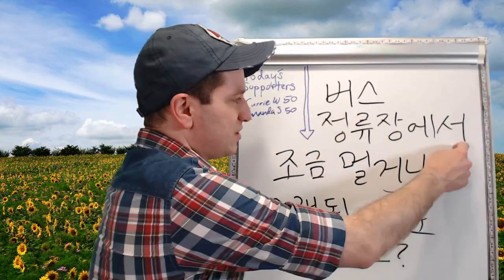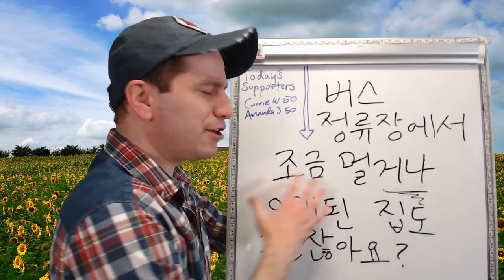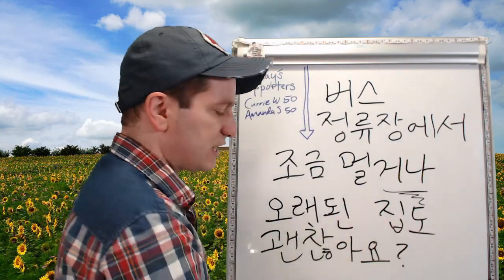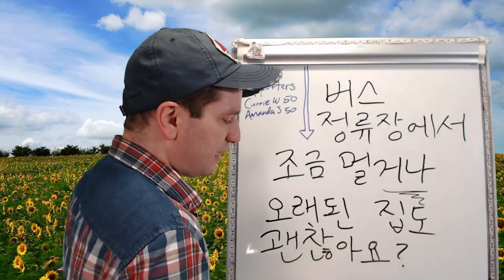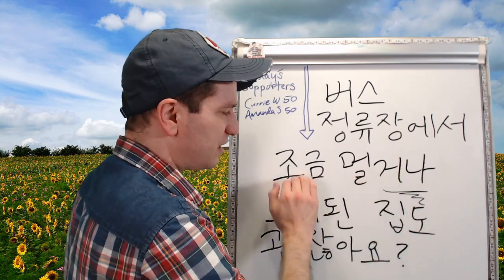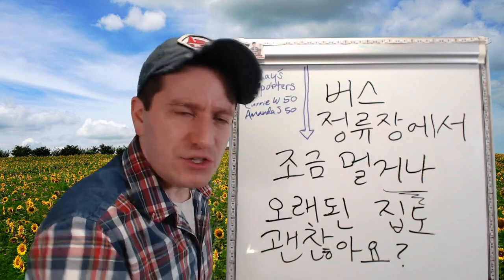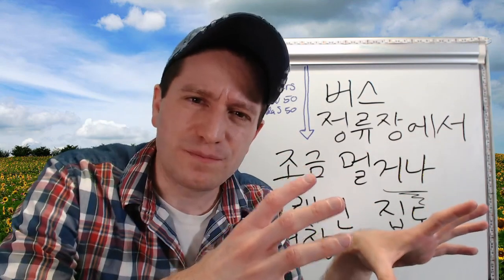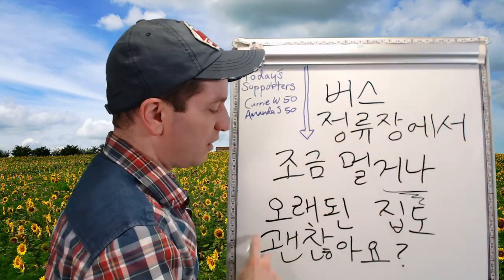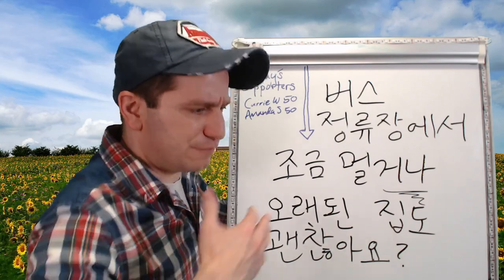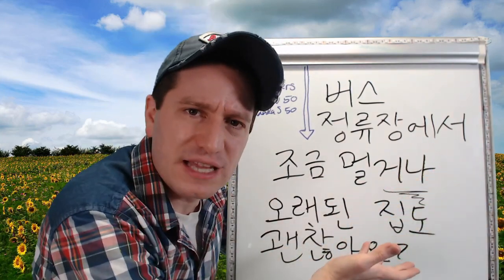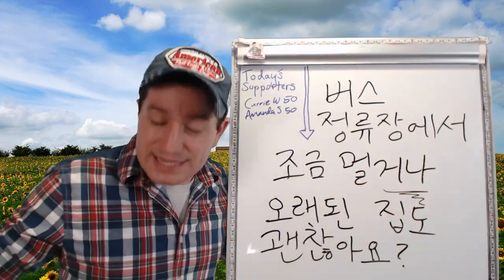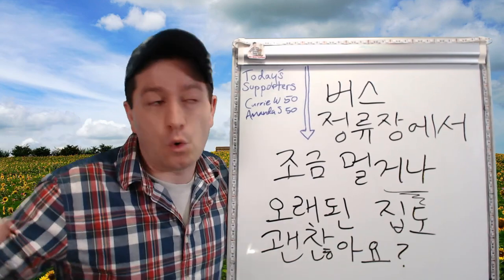버스 정류장에서 조금 멀거나 오래된 집도 괜찮아요? '버스 정류장에서' means 'from the bus stop.' '조금 멀거나' means 'a little bit far, or.' '오래된 집' means 'an old house.' So: is it okay if the house is a little bit far from the bus stop, or if it's an old house — or something like that?